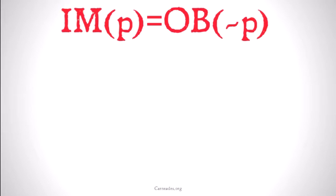We're going to define impermissible that P, it's not allowed that P, as it's obligatory that not P. That makes sense. If something is not allowed, it means that you ought to not do it. If something is impermissible, it's obligatory that you not do that thing.